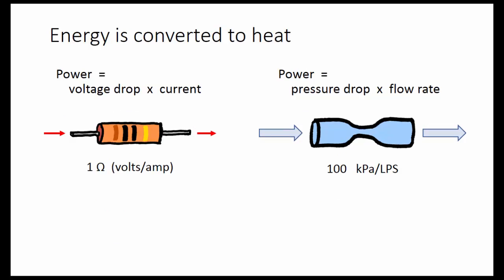Energy is converted to heat. The power is equal to the voltage drop multiplied by the current. For this resistor, if the voltage drop is 1 volt and the current is 1 amp, the power dissipated is 1 watt.